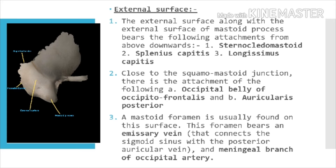The external surface, along with the external surface of the mastoid process, bears the following attachments from above downwards: number 1, the sternocleidomastoid; number 2, the splenius capitis; and number 3, the longissimus capitis.